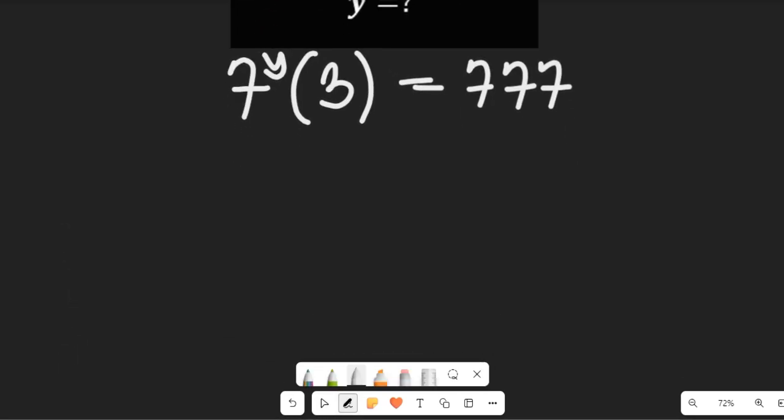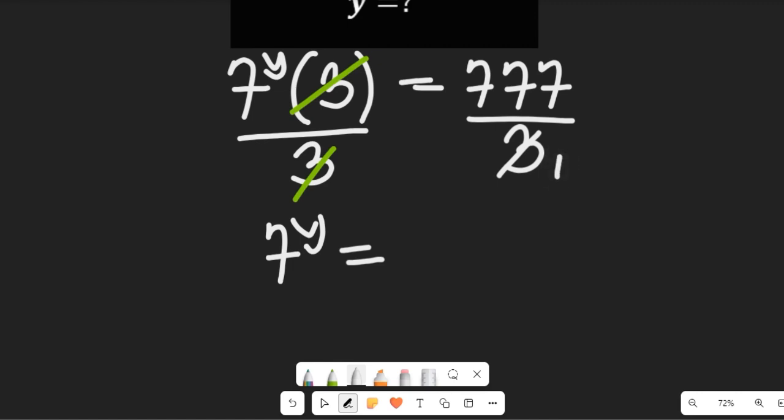So what we're going to do from here is divide both sides by 3. If you divide both sides by 3, you'll find that the 3s cancel out, and we'll be left with 7 to the power of y equal to 777 divided by 3, which is 259.